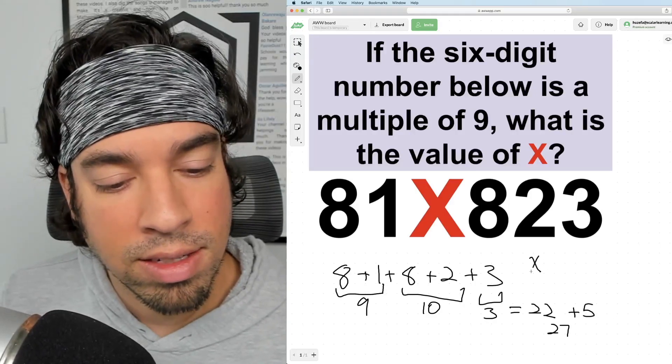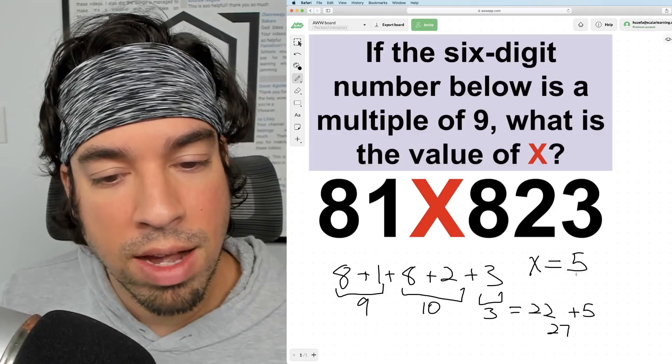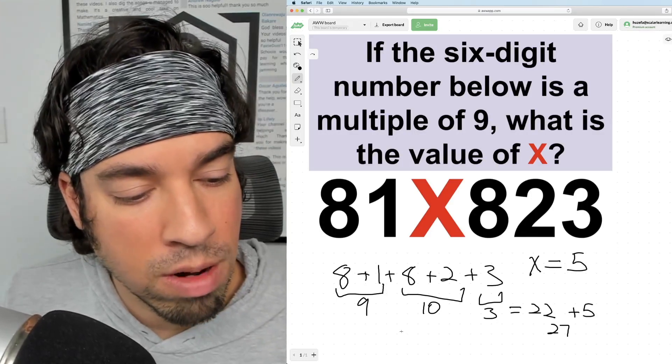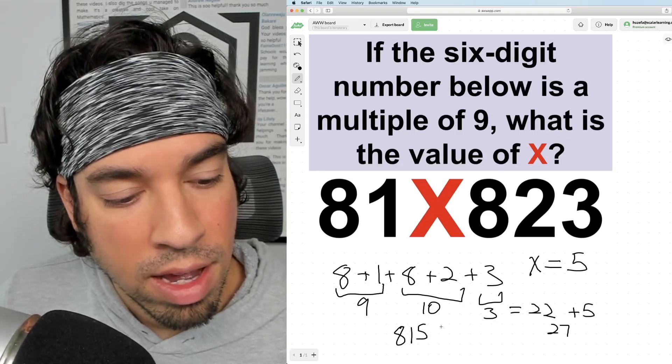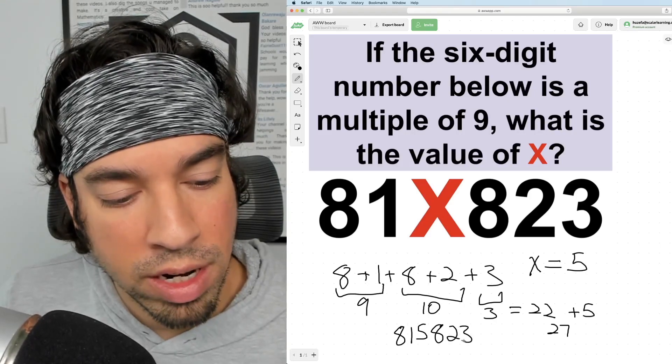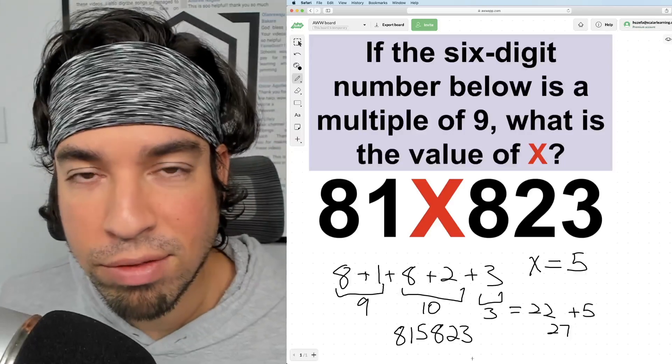Therefore, X equals 5. So that means the full six-digit number would be 815823, and you can go ahead and divide that by nine and see for yourself.